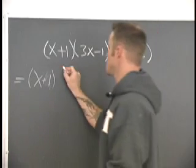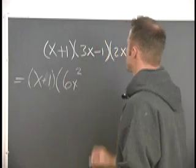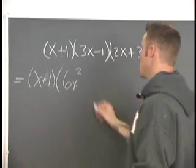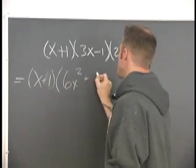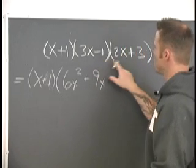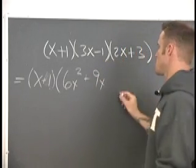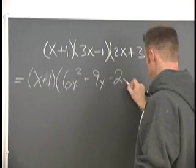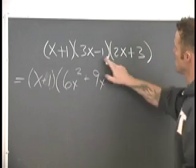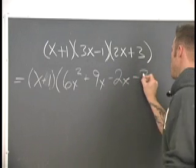So we're going to be using the distributive law. That gives us 6x squared. 3x times positive 3 gives us positive 9x. Negative 1 times 2x gives us negative 2x. Negative 1 times positive 3 gives us negative 3.